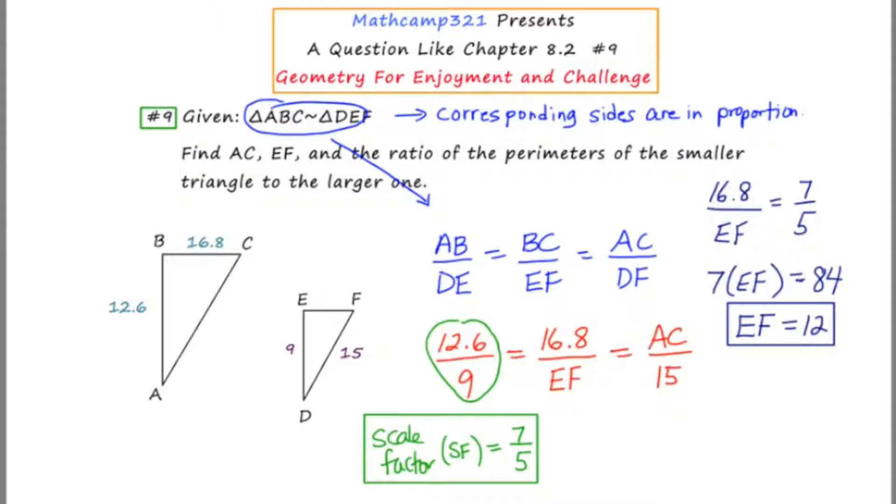Now I'm going to go back to that same scale factor, and I'm going to set it equal to the third ratio. So let's see where there's a little more space, maybe up here in the corner. I'm going to say AC is to 15, as 7 is to 5. I'm going to cross multiply, getting me 5AC. And then of course, 15 times 7 is 105. I'll divide both sides by 5, leaving me with AC is equal to 21.